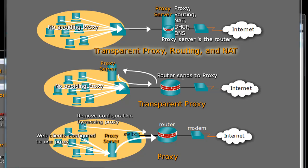What you could also do is set up your Linux proxy server to also be your router. In this case, we take the proxy server, remove the router, and now our proxy server is our router. It's going to handle the routing, network address translation (NAT), DHCP — handing IP addresses out to clients — and it can even handle DNS and other things. It can be a file server. It's kind of an all-in-one solution where you take your Linux computer and turn it into a router, an everything box, and a transparent proxy.